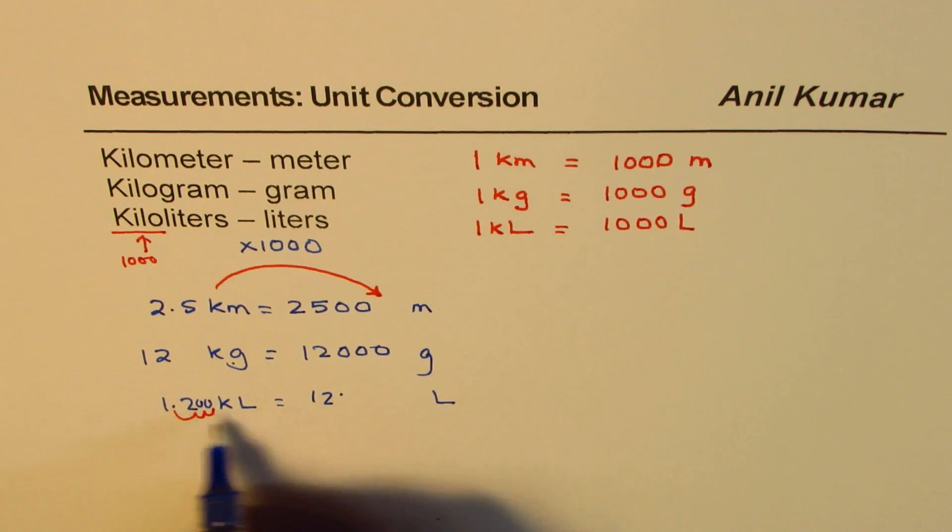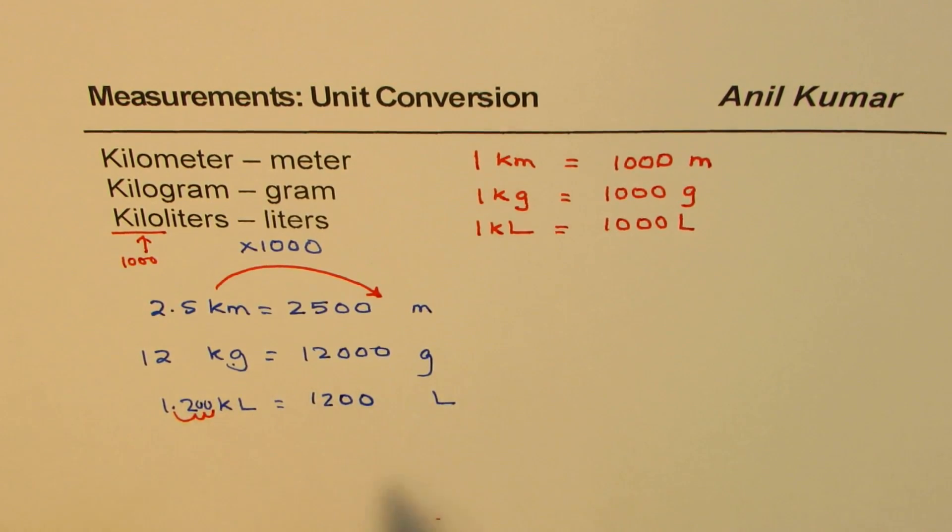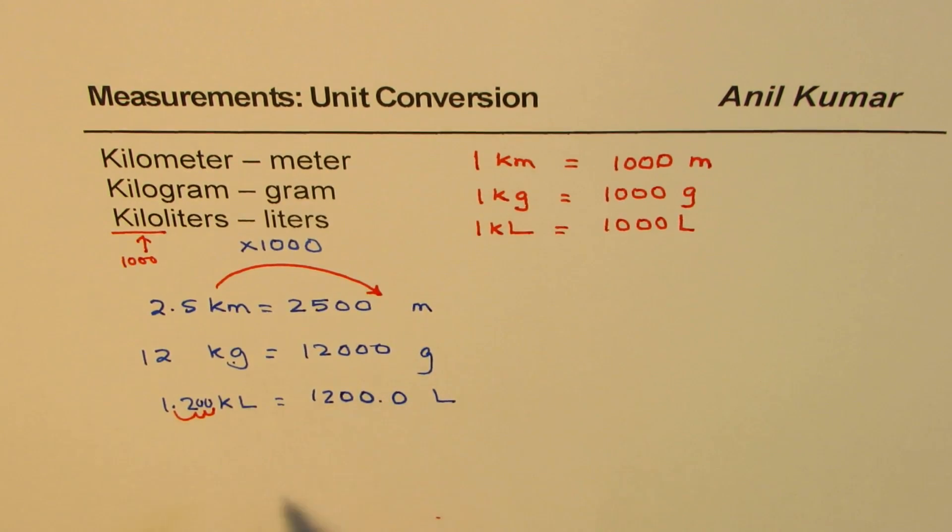So then it comes to 1, 2. So 1 place, then 0, 2 place, another 0, 3 places, correct? So it becomes 1,200 liters. Sometimes you can also write with decimal zero. That gives you the answer in liters. Do you see that? That is how you could do it.